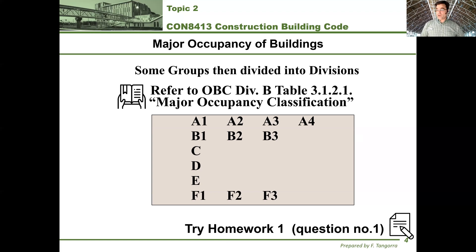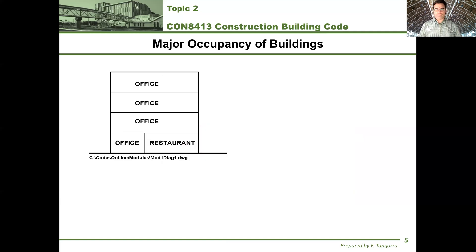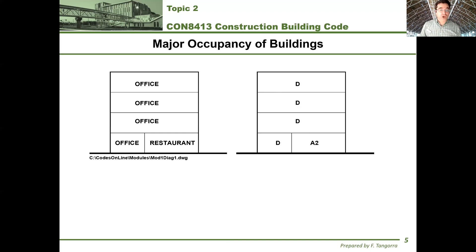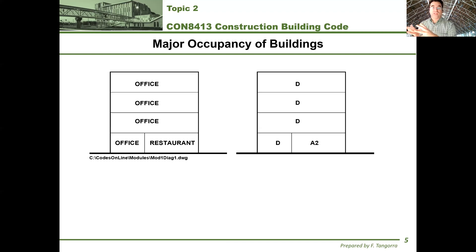Let's do an example together. We have a four-story building. The word 'storey' in building code speak — spelled S-T-O-R-E-Y — is used to mean floor level. The bottom storey has an occupancy of office and restaurant, and the top three storeys have an occupancy of office. That translates into Group D for the office portion and Group A2 for the restaurant portion of the bottom storey.